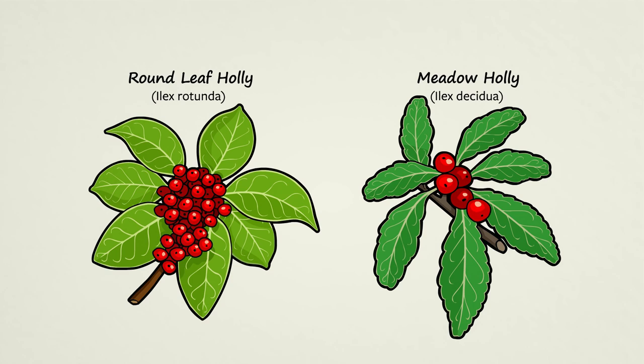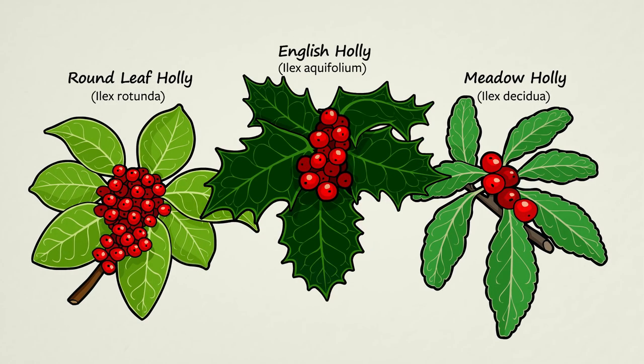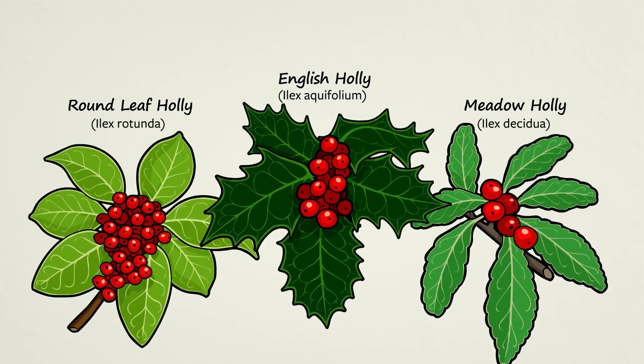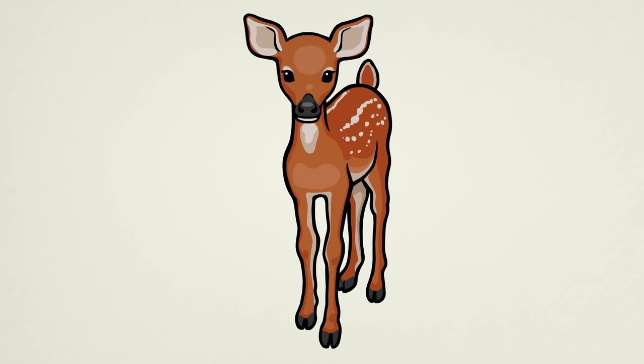Many species of holly have smooth edged leaves. English holly, however, is covered in spikes which protect the plant from deadly predators. How did these weapons first evolve?